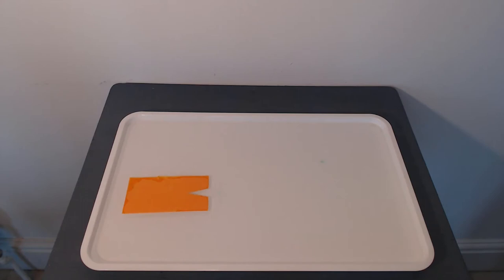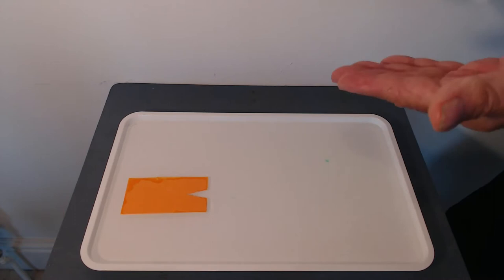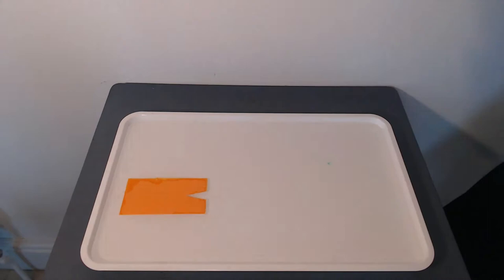Now why is this? Well soap lowers the surface tension of the water, so at the back of the boat the surface tension is suddenly reduced. At the front of the boat the surface tension is still the same as it was before, so it's a greater force at the front and this pulls the boat forwards.